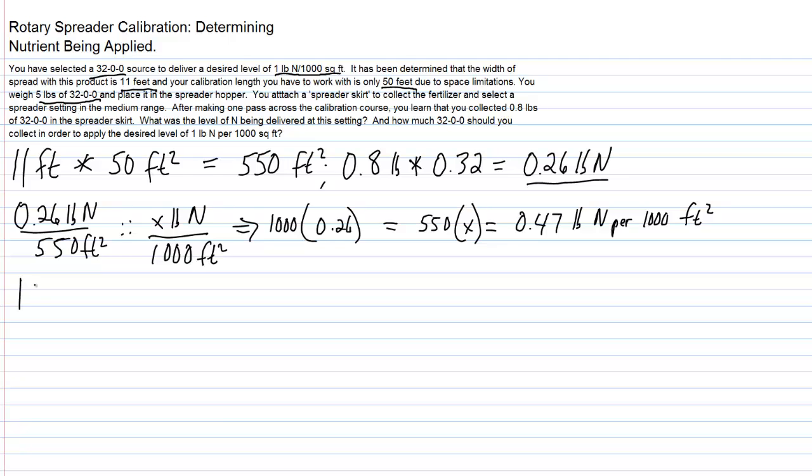So one pound of N which is desired, now we're going to divide by that nutrient analysis 32 percent. So one pound of nitrogen divided by 0.32, that's going to give me a larger number and this is going to be 3.1 pounds of 32-0-0. That's how much we would need to give us one pound of nitrogen.